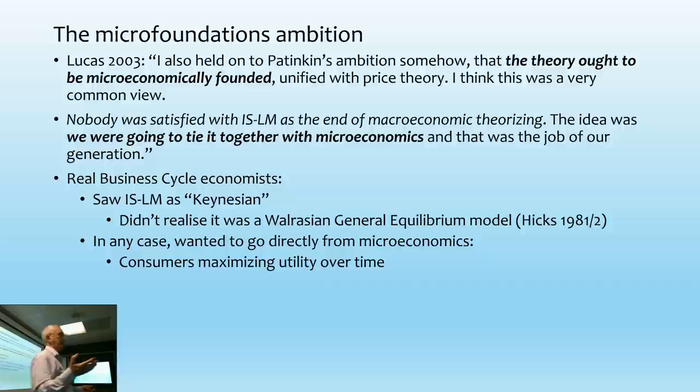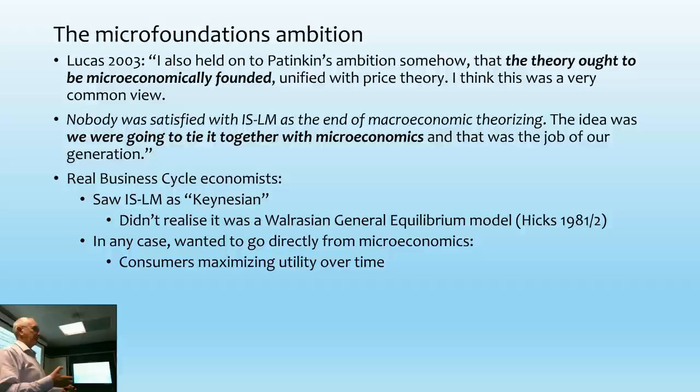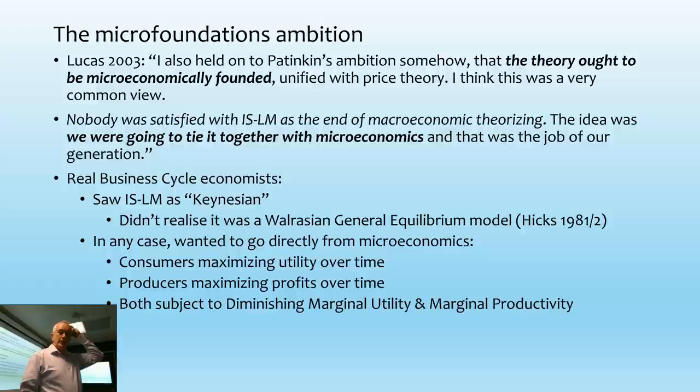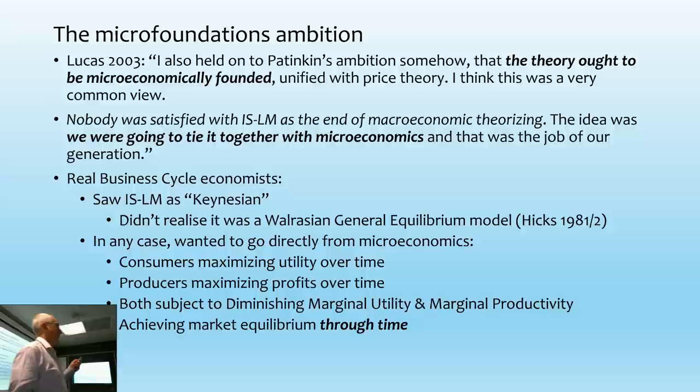To talk about maximizing utility over time, they're talking about a trade-off between income and leisure. You're trying to maximize your overall utility from the combination of leisure — where that's a good — and income, where to earn income you've got to work, which is a bad. So there's a negative utility from work and a positive one from consumption, and that's what they're trying to maximize over time. Then you have producers who are also trying to maximize profits over time. Both are subject to diminishing marginal utility and diminishing marginal productivity.